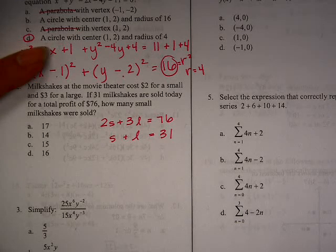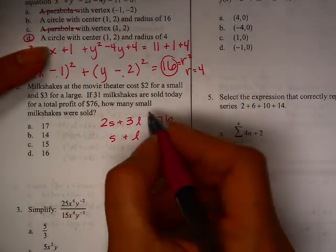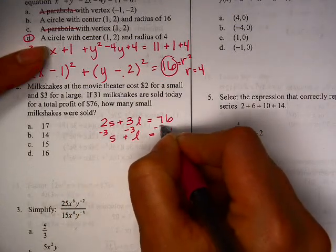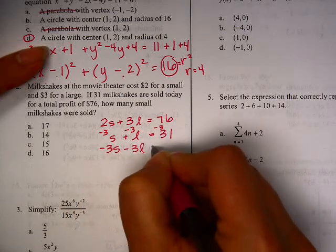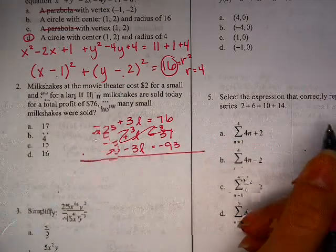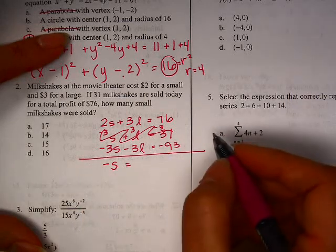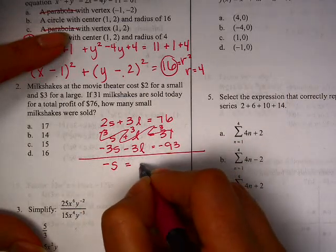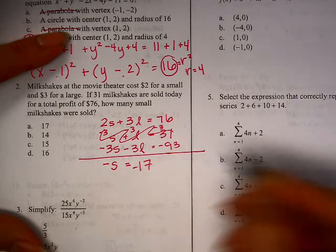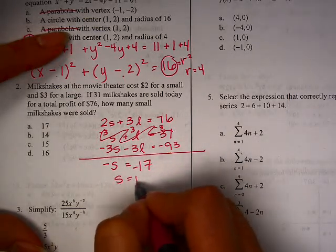So, I am looking for small, so I probably want to get rid of the large. So, I'm going to multiply through by a negative. So, this is negative 3s minus 3l equals negative 93. So, when I put those two together, I get negative s is equal to 17, negative 17. And so, s is equal to 17. There we go.